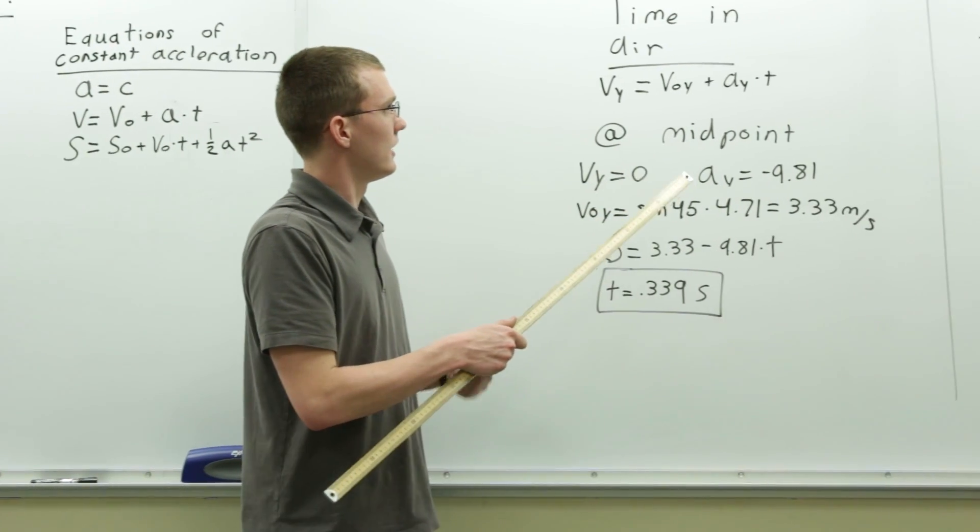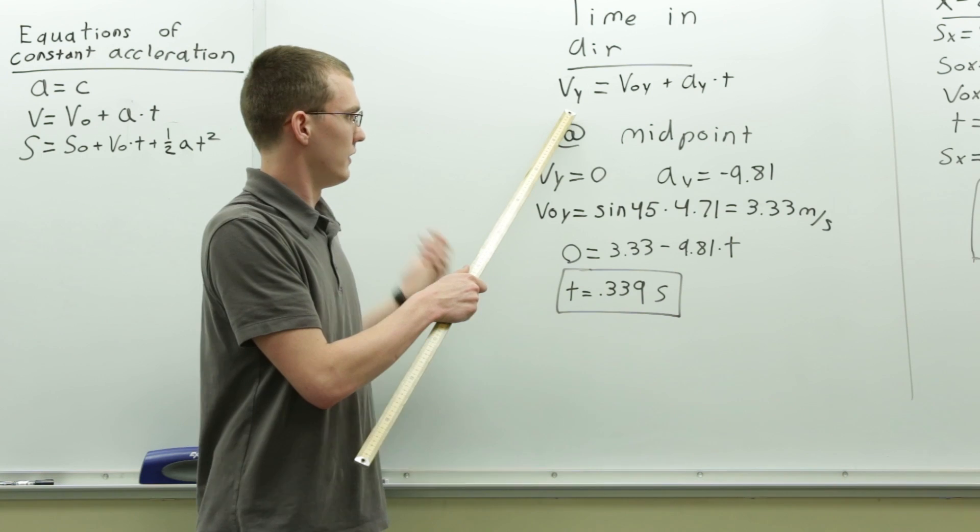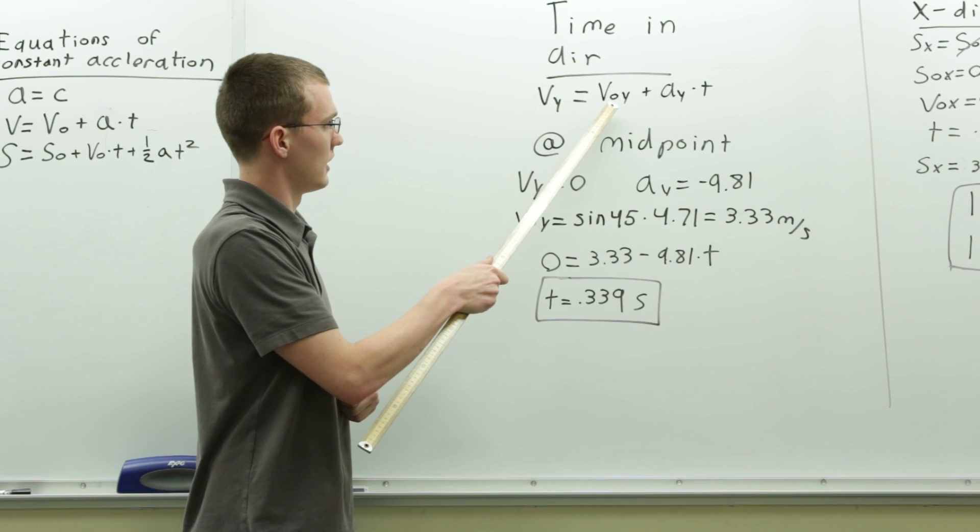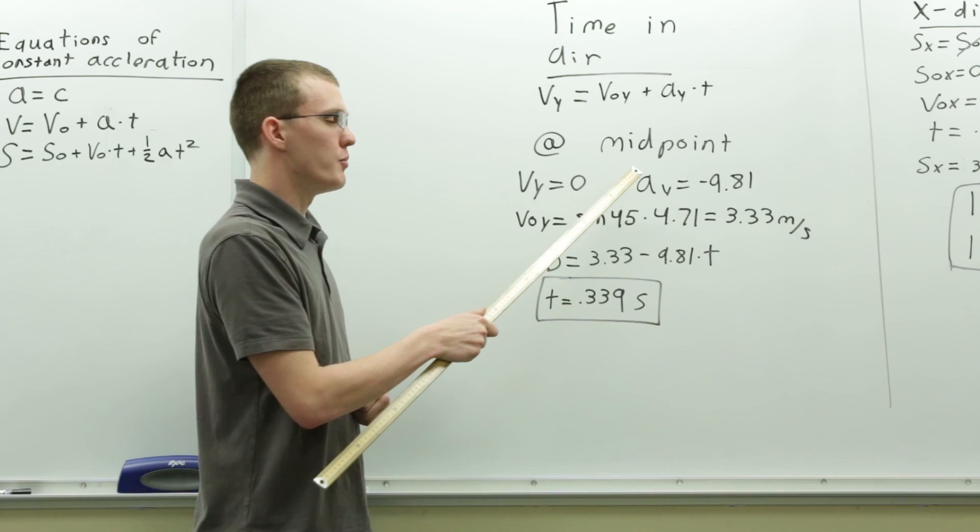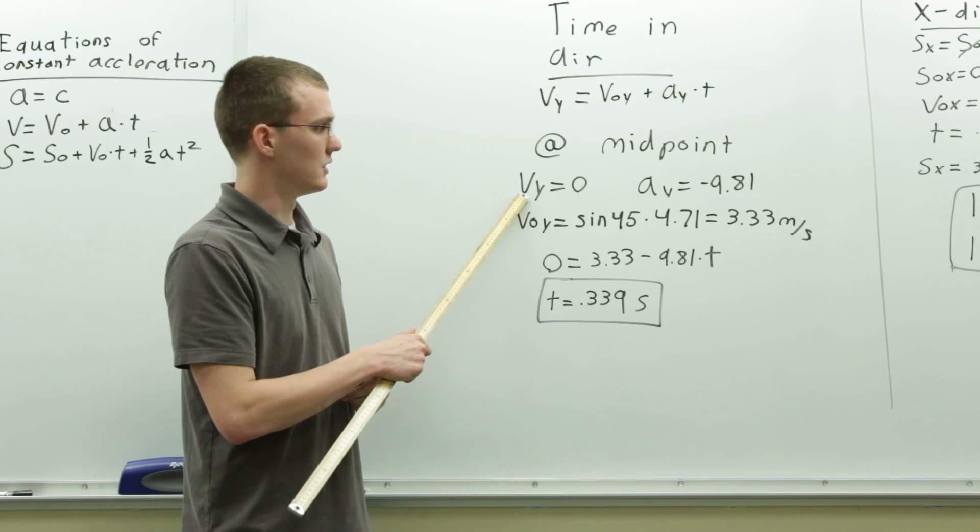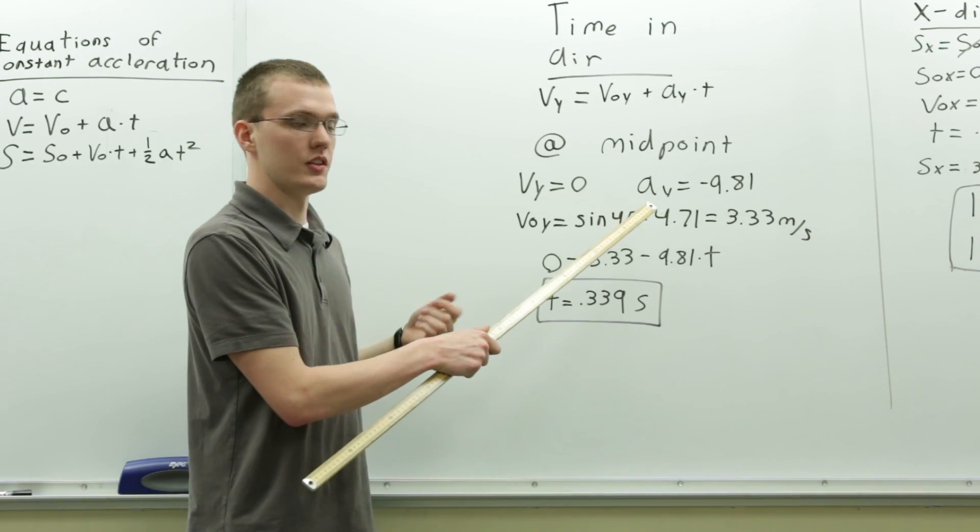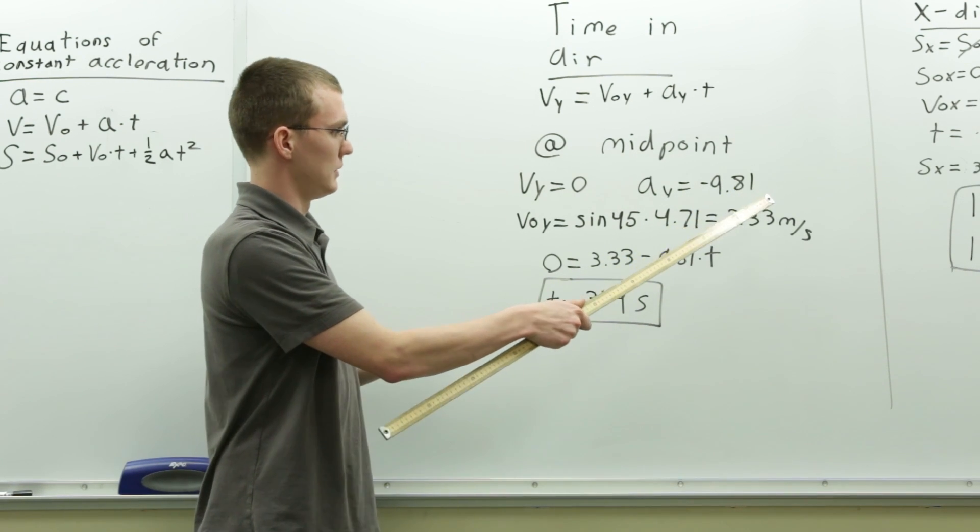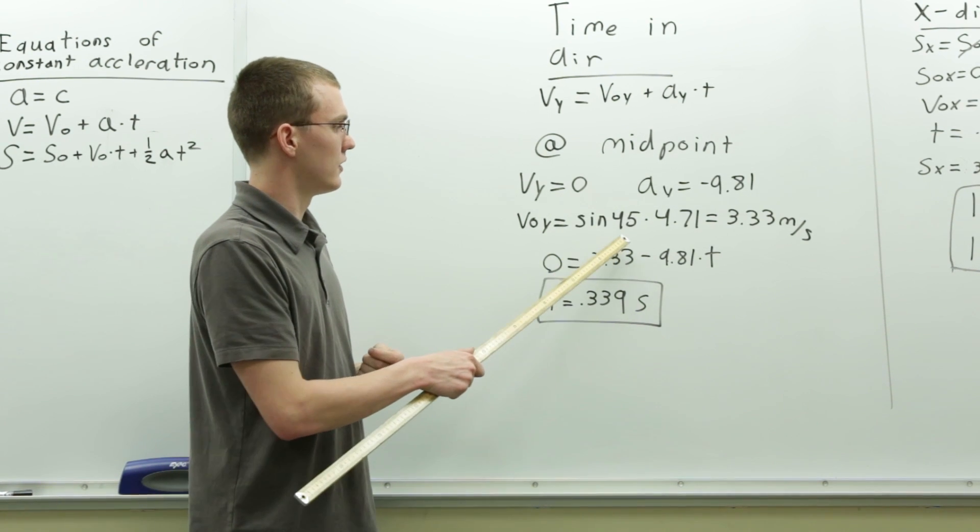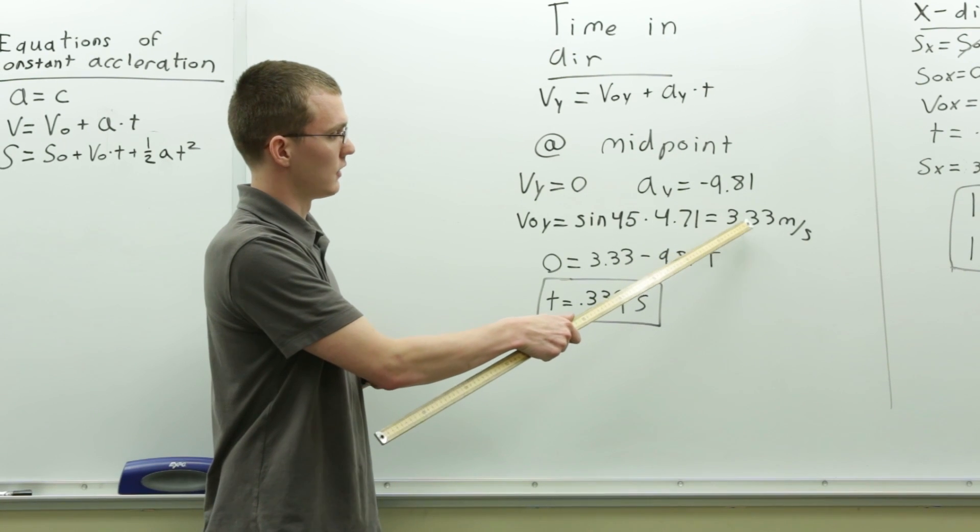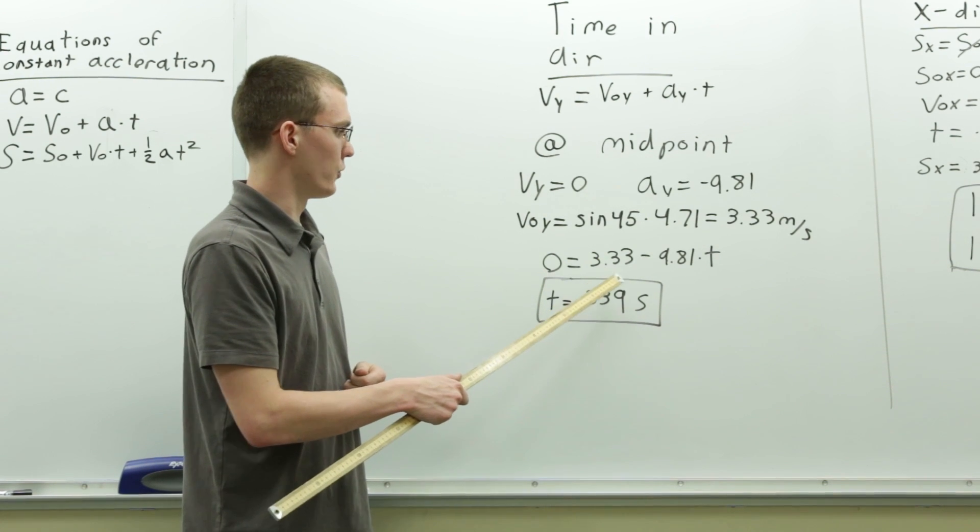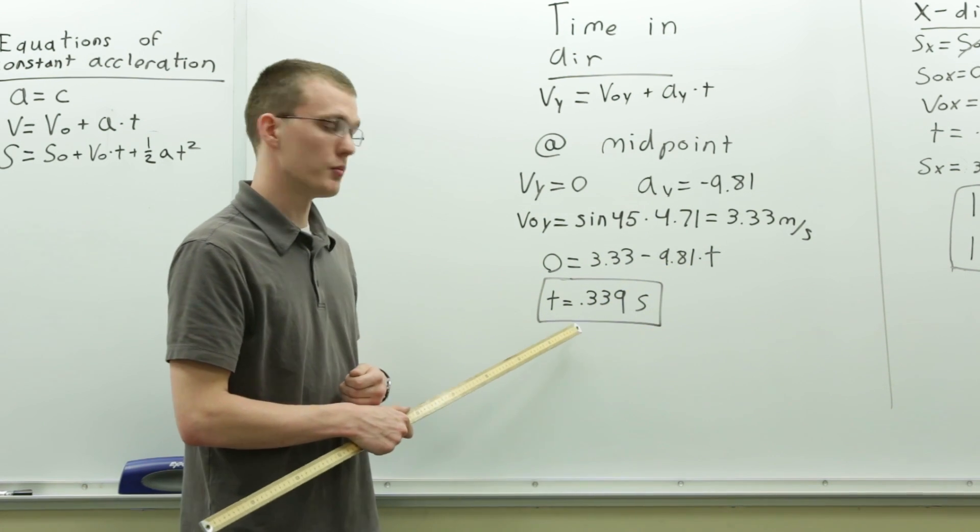Here is the calculation for finding the time in the air. We find our equation for the velocity in the y direction: V equals the initial velocity of the y plus the acceleration of the y times time. At the midpoint, so at the point where the ball begins to fall in the y direction, the velocity in the y direction is 0. The acceleration due to gravity in the y direction is always negative 9.81 meters per second squared. So now we need to find our initial y velocity. Take the sine of the angle times the initial velocity to get 3.33, your initial y velocity. Then, plugging in 0, 3.33, and negative 9.81, you solve for the time 0.339 seconds.